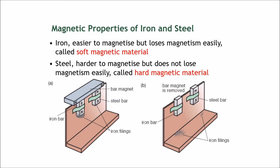We are here to talk about the magnetic properties of iron and steel. We have just talked about magnetic materials in general — things that can become magnets or can be attracted by magnets. However, iron and steel have a slight difference that is quite critical. Iron is easier to magnetize but loses its magnetism easily, and is called a soft magnetic material. Steel is actually an alloy of iron — it's harder to magnetize but does not lose its magnetism easily, and is called a hard magnetic material.